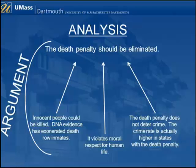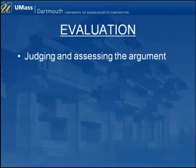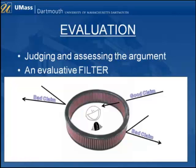So the first step in critical thinking is to make the argument clear by analyzing it. The next step is evaluation. Evaluation involves judging how well the arguments support the claim — assessing the quality of the argument. If an argument is found inadequate, a critical thinker will reject the claim being made. This is the real purpose of critical thinking: constructing an evaluative filter that keeps out shoddy claims. Even more than analysis, evaluation is a skill that one needs to study and work on.